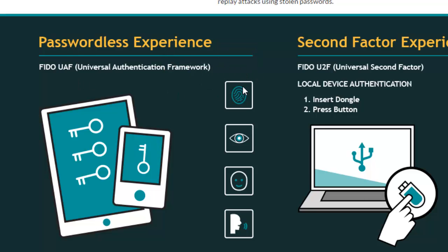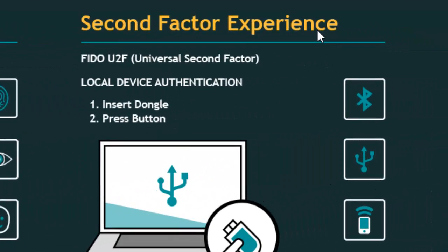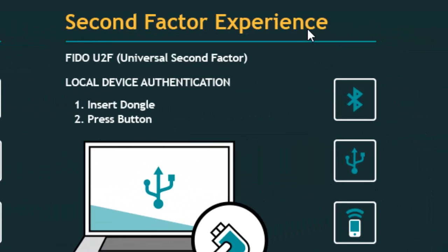FIDO Alliance is also providing a second-factor experience. In that approach, you can set a password — it can be a very simple password, maybe a four-digit PIN — but along with that password or PIN, you will have to enter a security code as a second factor using a USB security key, dongle, watch, or Bluetooth.